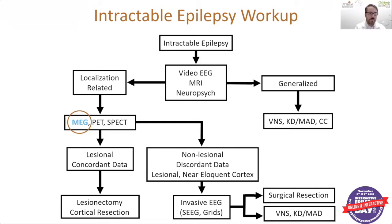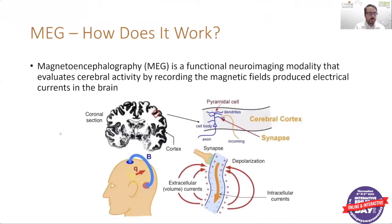For this specific talk, we're going to focus more on magnetoencephalography, or MEG. MEG is considered a functional neuroimaging modality where it evaluates cerebral activity by recording the magnetic fields produced by electrical currents in the brain.